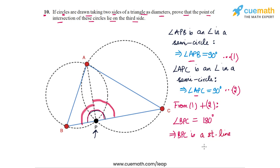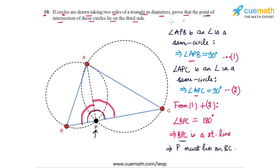Since BPC is a straight line, P must lie on BC — that is the only possibility. This completes our proof that the point of intersection of these circles lies on the third side. With this, we have completed question 10.